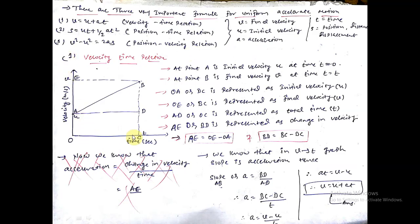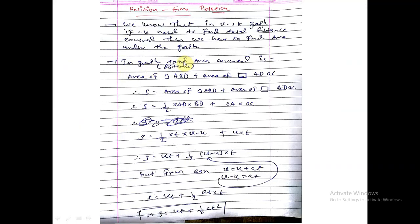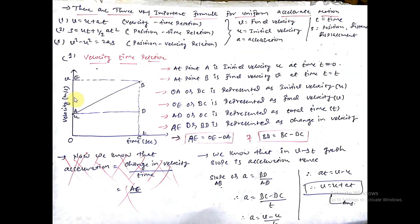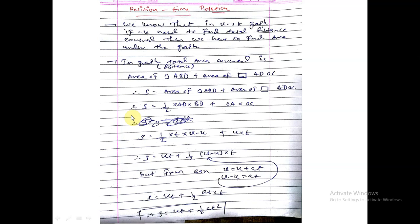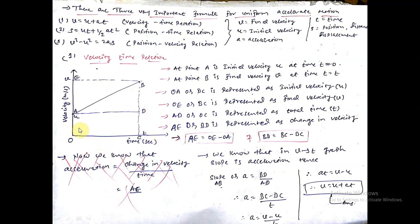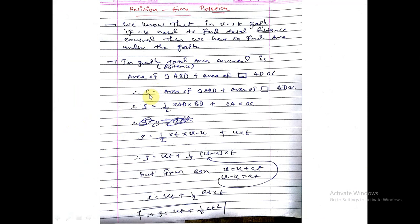It's very simple. Again velocity versus time graph. Here, do you see, we need to find the area of ABOC. This graph below has a triangle made and this square area made by the rectangle. So total area is equal to area of triangle ABD plus area of rectangle ADOC.